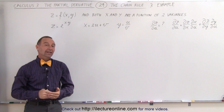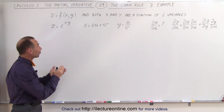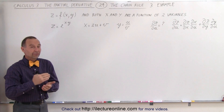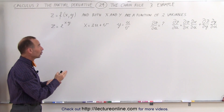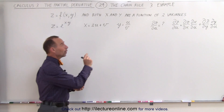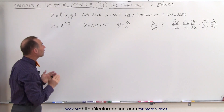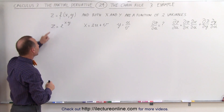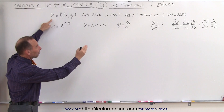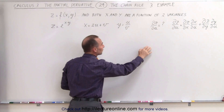Welcome to ElectronLine. Let's do an example of how to find the partial derivative of z, which is a function of x and y, where x and y are themselves functions of two other variables u and v. We're trying to find the partial derivative of z with respect to one of those variables — in this case, with respect to u.